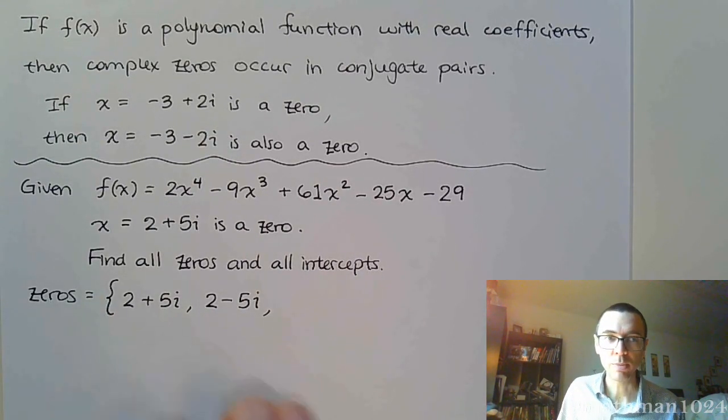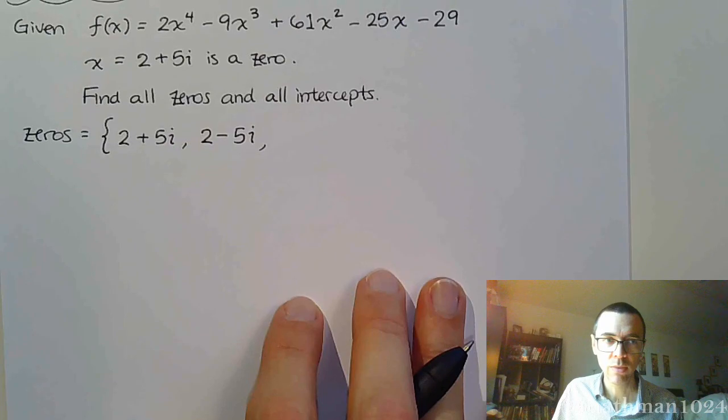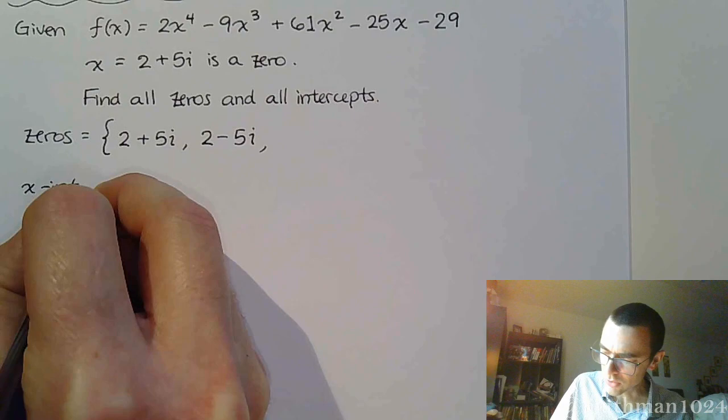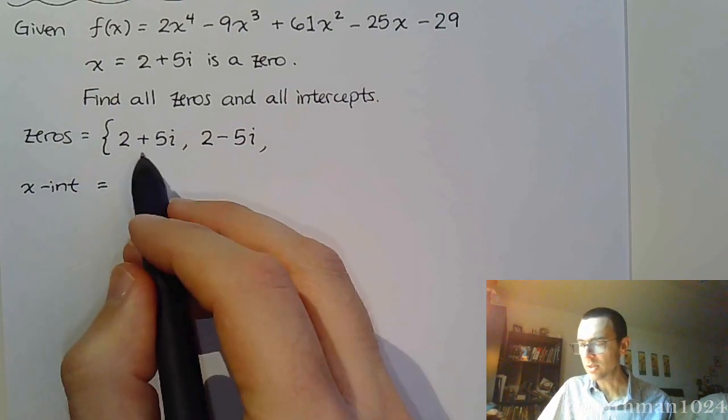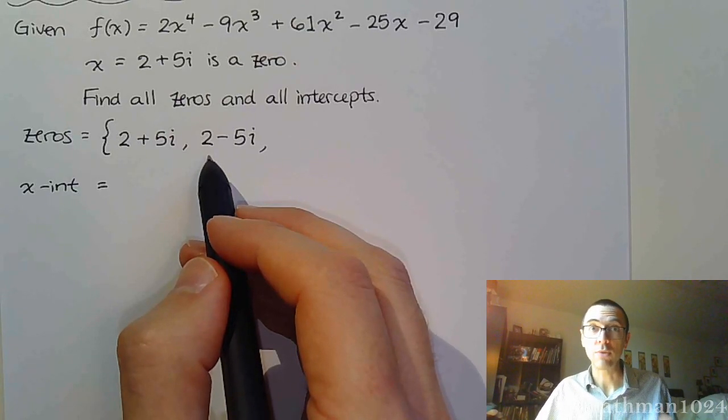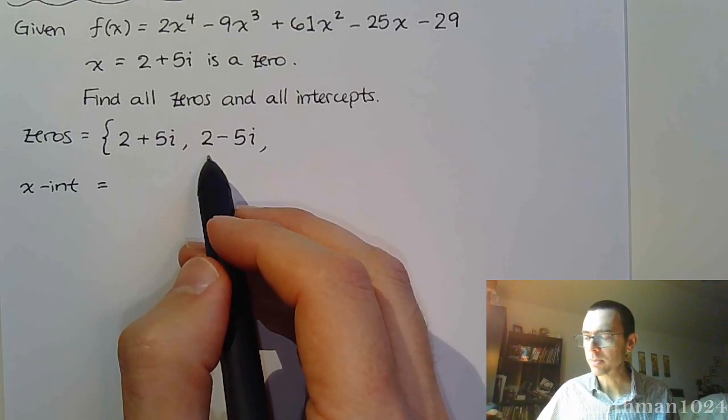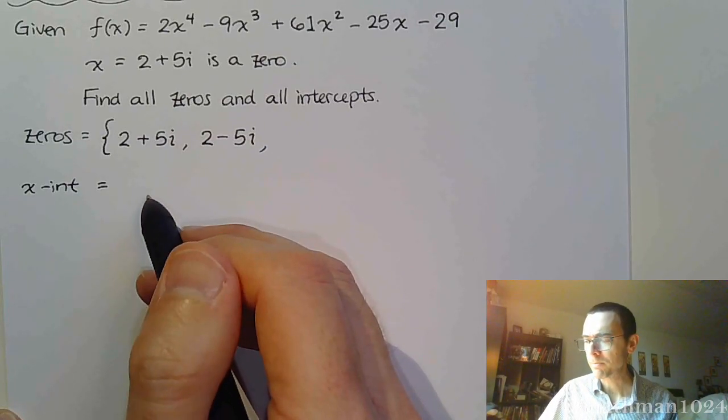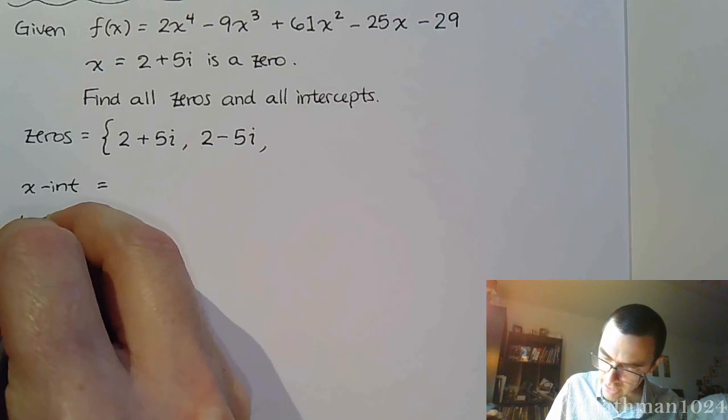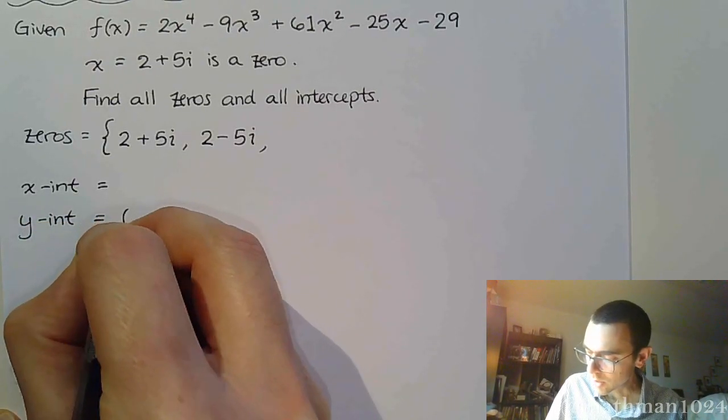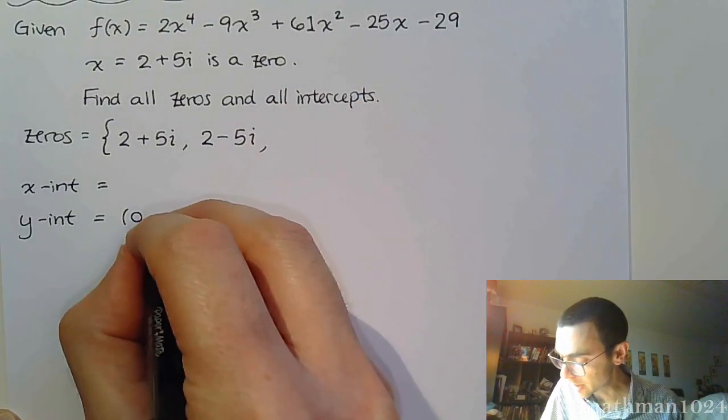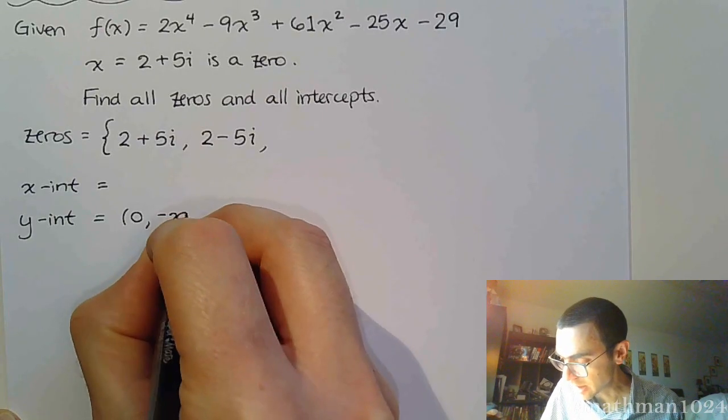In terms of the intercepts, well, if we want to talk about the x-intercepts, we're kind of in trouble right now. Because these guys are complex and they don't correspond to real numbers. They're not real numbers, so they don't correspond to x-intercepts. So, I can't say anything about the x-intercepts right now. But, I can, as always, talk about the y-intercept, which is going to be the ordered pair (0, -29).